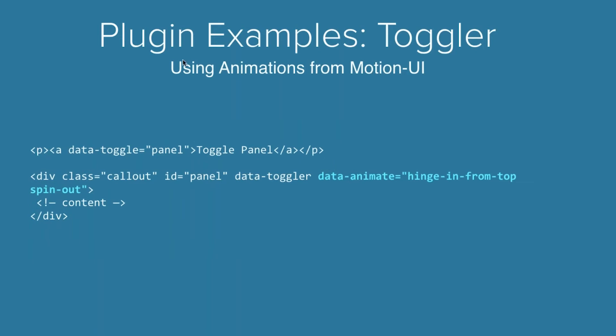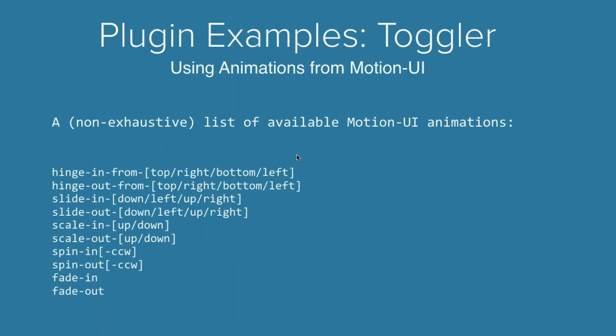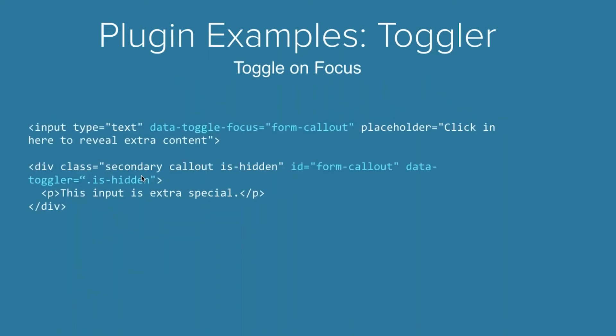We also talked in the intro class a little bit about animations. You can hide and show things and automatically use animations from Motion UI using data-animate. There's a whole list of animations included by default from Motion UI, or you can define your own. These are all pretty basic use, but there's some additional fun stuff you can do with Toggler.